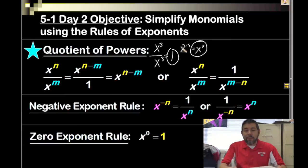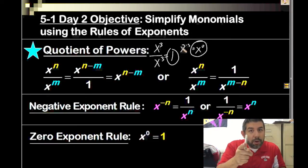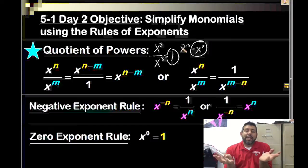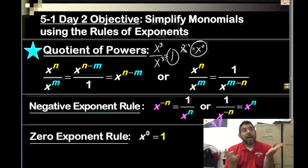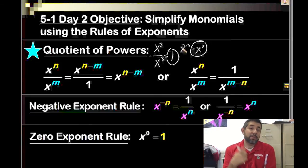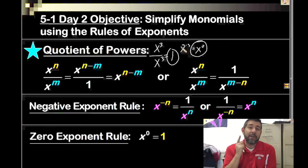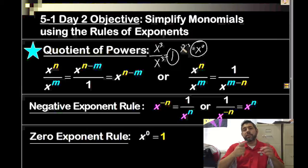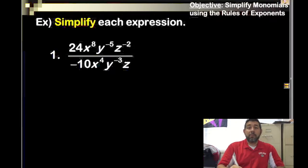Next year, if another teacher asks you why x to the zero equals one, don't just say 'because it is.' You can say: x to the n divided by x to the n is x to the zero, and that equals one. Alright, let's take a look at some examples.